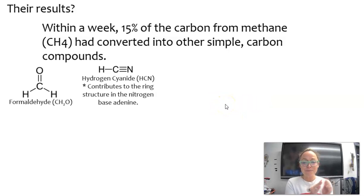The hydrogen cyanide is an important molecule that actually contributes to the ring structure in adenine, which is the nitrogen base that we find in RNA. That's the A that pairs with U and then the A that pairs with T. Adenine is also the nitrogen base found in ATP.